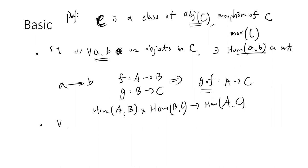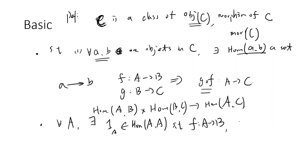The second condition: given any object A, there is an identity morphism in Hom(A, A), such that for any morphism f from A to B, the identity on A composed with f is the same as f, and the same as f composed with the identity on B. So for each A you always have the morphism 1_A such that composing with any other morphism f gives you f.